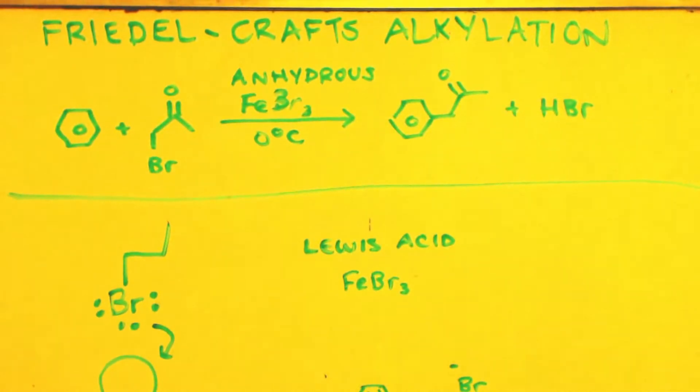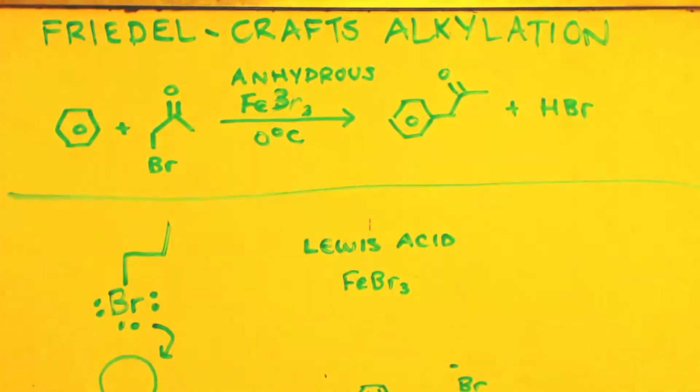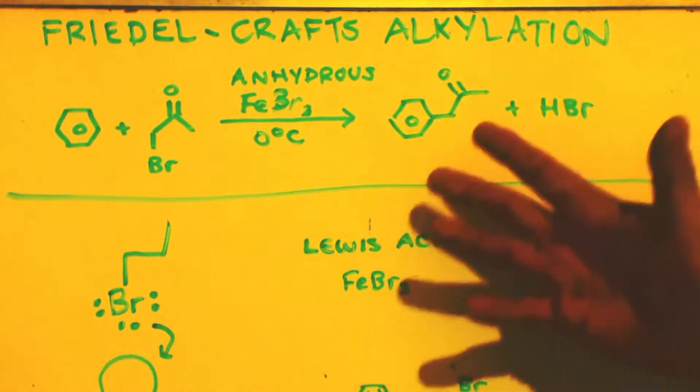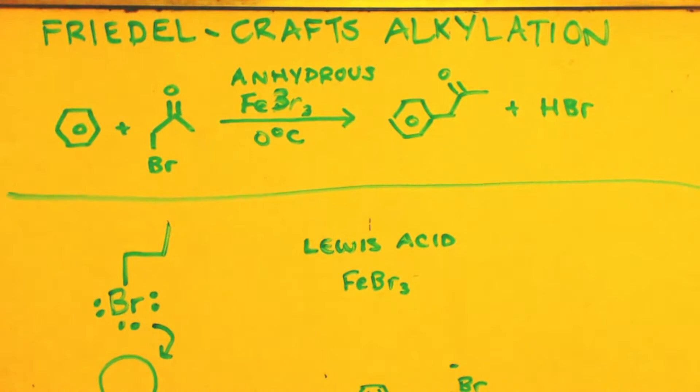All right, this is John White, Breaking Bad, talking about Friedel-Crafts alkylation, mainly making P2P. Here's the formula for it. All you need is benzene, bromoacetone, a tiny bit of anhydrous iron bromide, and do it at zero degrees C, and you'll make P2P and HBr.